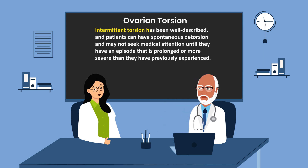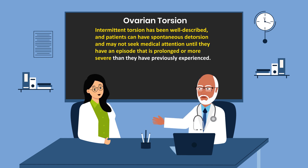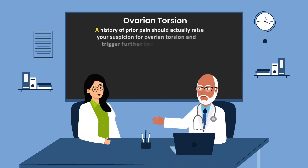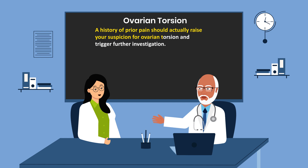Intermittent torsion has been well described, and patients can have spontaneous torsion and detorsion and may not seek medical attention until they have an episode that is prolonged or more serious than they have previously experienced. A history of previous pain should actually raise your suspicion for ovarian torsion and trigger further investigation.